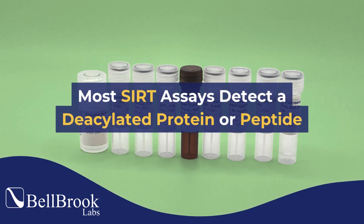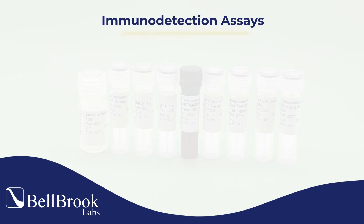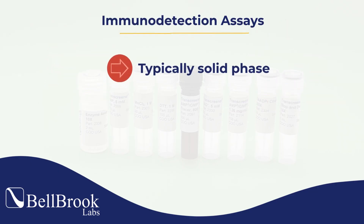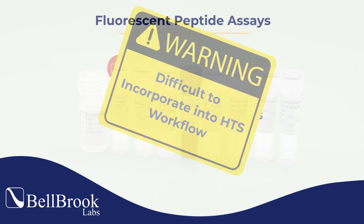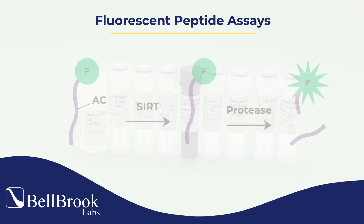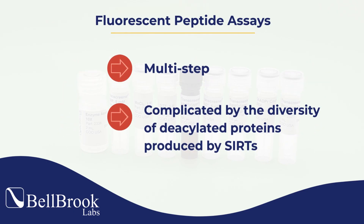Most SIRT assays detect a deacetylated protein or peptide either using immunodetection or selective cleavage of a fluorescently labeled deacetylated peptide. The immunodetection assays are typically solid phase and require wash steps, making them difficult to incorporate into an HTS workflow. The fluorescent peptide assays are also multi-step, and they are complicated by the diversity of deacetylated proteins produced by SIRTs.